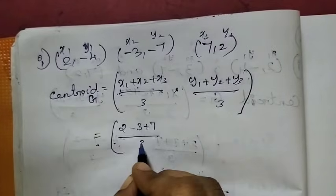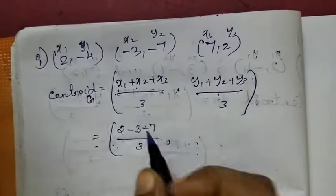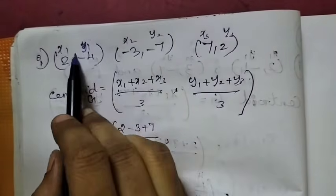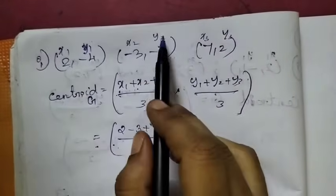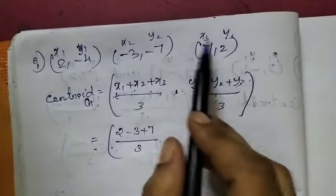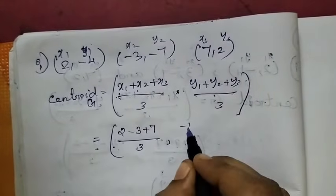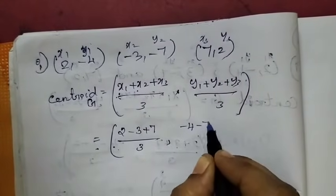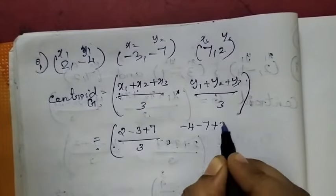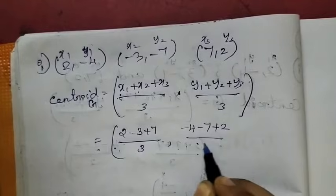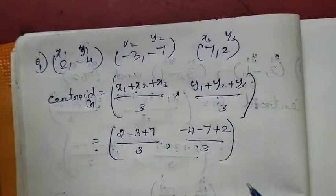For x3, y3 and the given values: y1, minus 4, minus 7, plus 2. So substituting: minus 4, minus 7, plus 2, by 3.